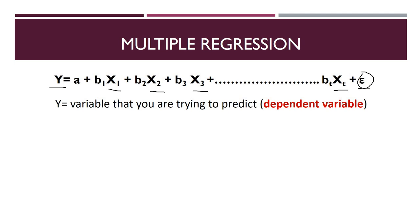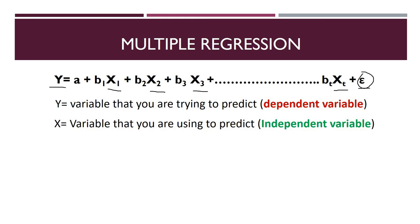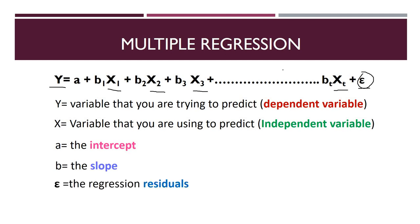Again, y is the variable we are trying to predict — the dependent variable. x represents the independent variables, and here we have more than one, which is why we call it multiple regression. A is the intercept, b is the slope, and e is the regression residuals — because there can be more factors not considered that are hidden.